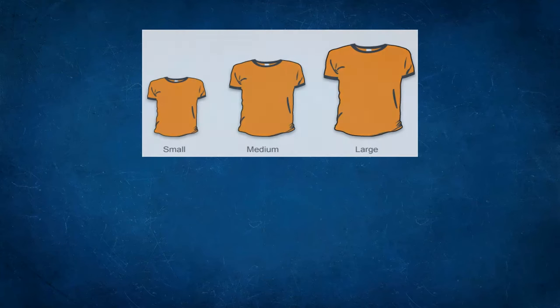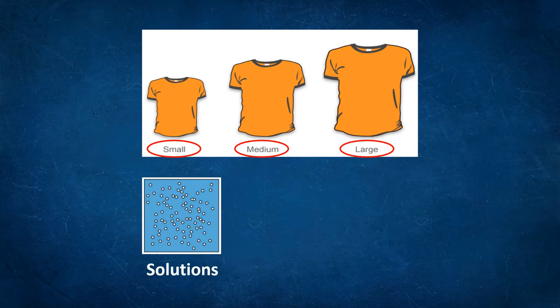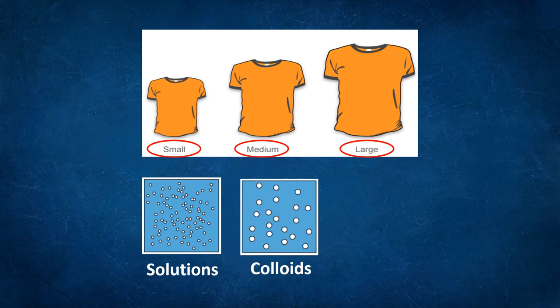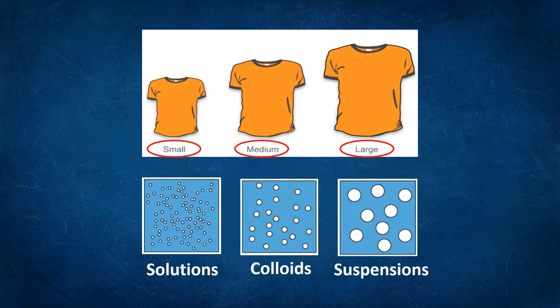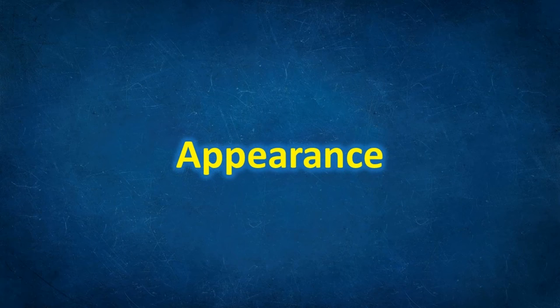It's just like a t-shirt: there are small, medium, and large sizes. In mixtures, the small size represents solutions, the medium size represents colloids, and the large size represents suspensions. Now let us move on to the appearance of these mixtures.